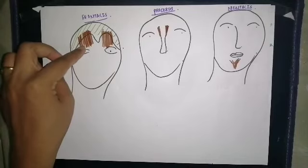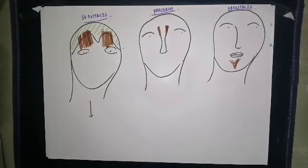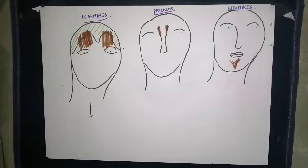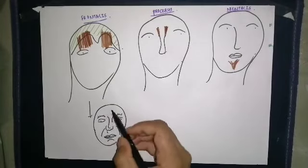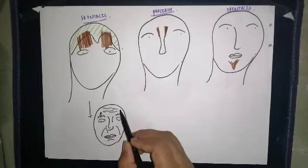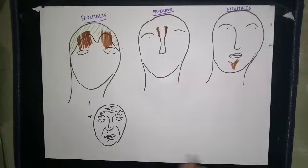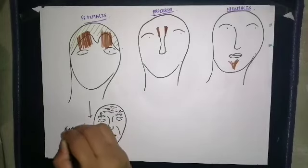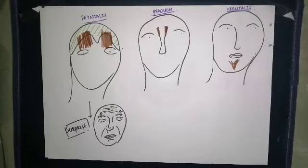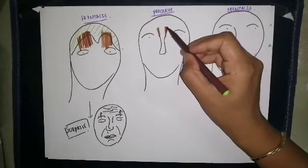The frontalis muscle, discussed in a previous video, is inserted superficially into the skin overlying the upper eyelid. Its contraction makes an expression of surprise — it draws the eyebrows upward and creates horizontal wrinkles in the forehead.